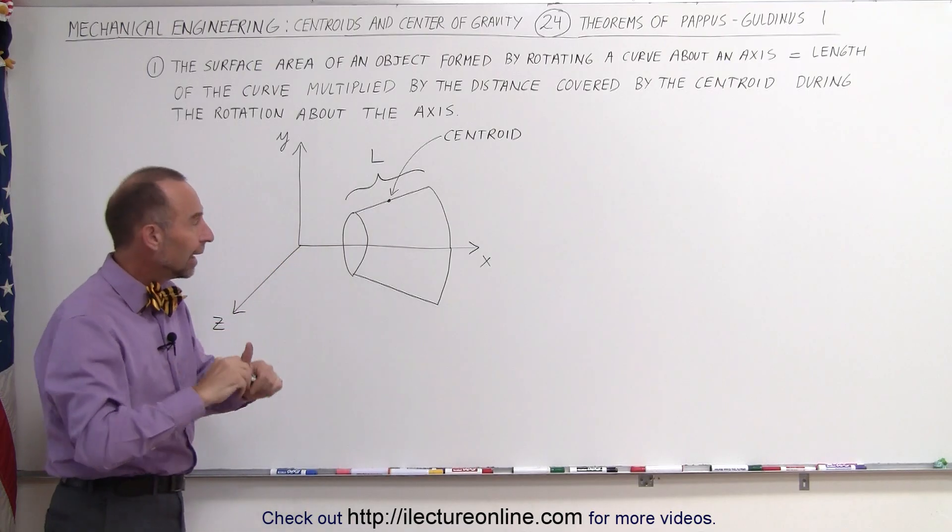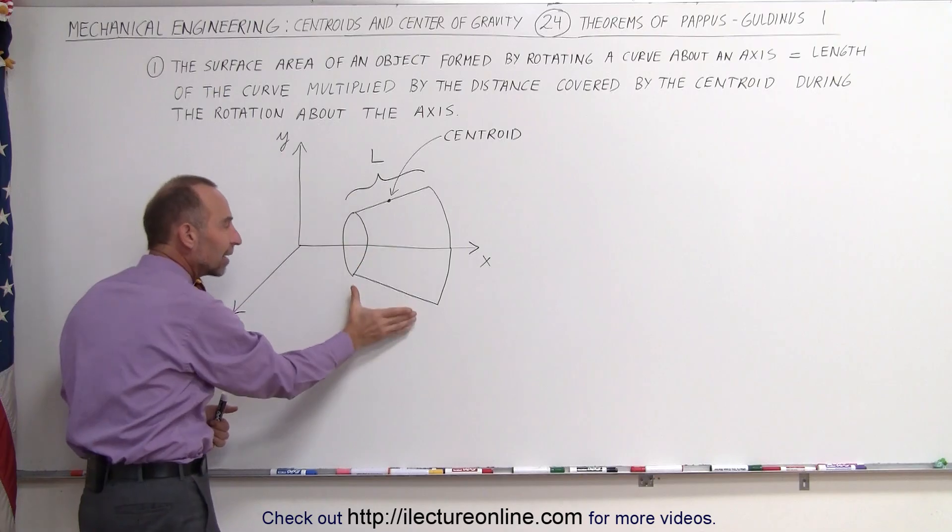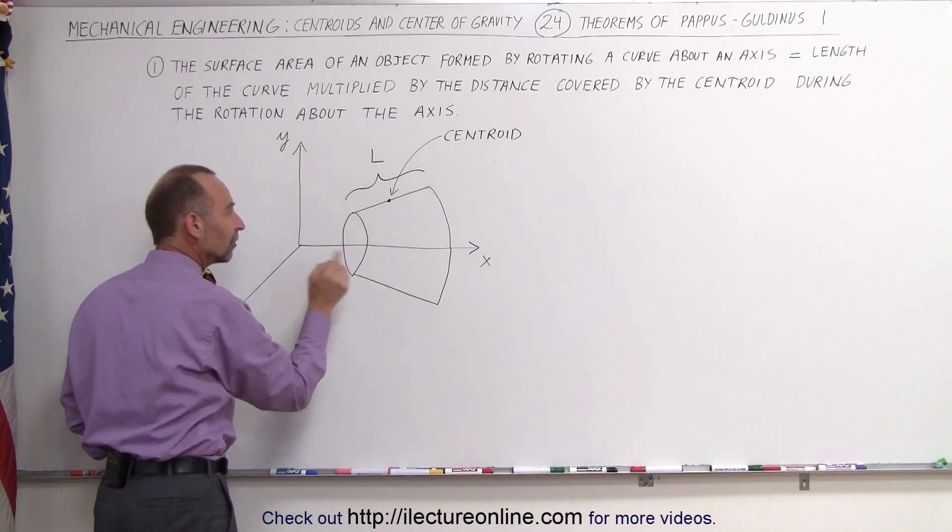That's the object that we end up with and now we're interested in figuring out what the surface area is of the side of this object. Not of course the holes here but the surface area of the sides.